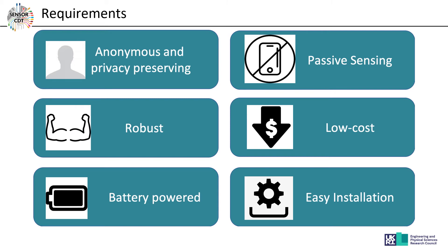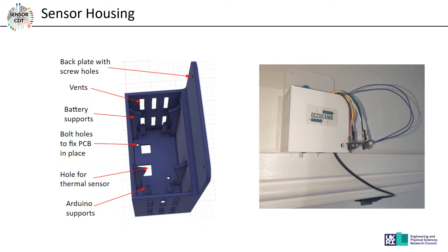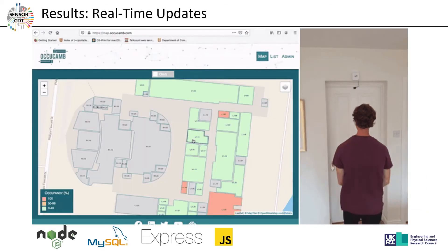To make our system practical, we ensured it addresses all key requirements. First, privacy — it is anonymous and passive, so no badge or phone is needed. It is robust, with live data viewing. It is low cost, easy to install, and battery powered, so no extra installations are required.